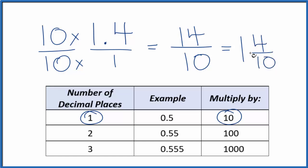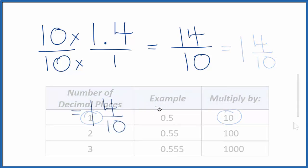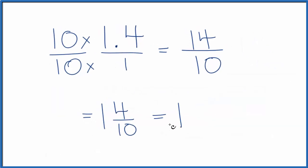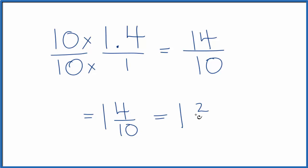We could even simplify that further. Let's give ourselves some room. We have 1, and 2 goes into 4 twice, 2 goes into 10 five times, so we could call the mixed fraction 1 and 2 fifths.